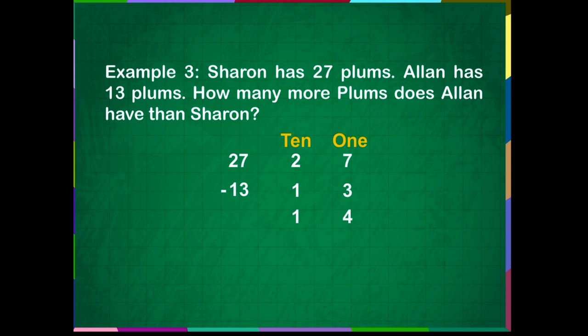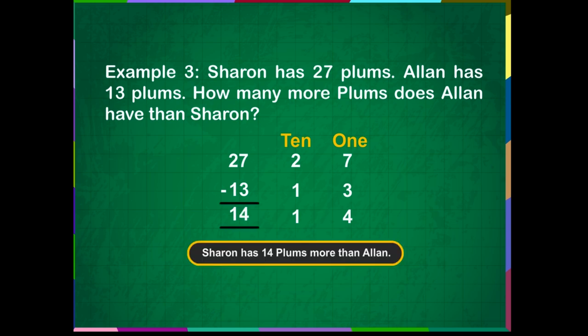So, 27 minus 13 is equal to 14. Sharon has 14 plums more than Allan.